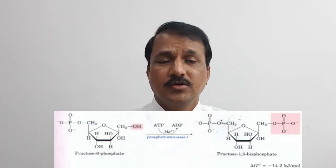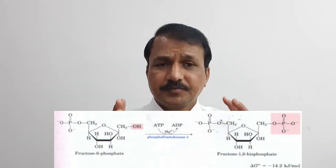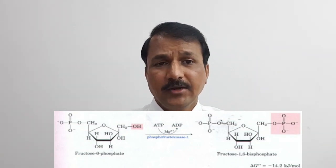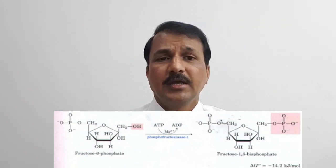Glycolysis is a universal pathway for all cells for energy needs, operating in both aerobic and anaerobic conditions. The cell controls the rate of glycolysis — either increasing or decreasing it — through PFK1. This enzyme converts fructose 6-phosphate into fructose 1,6-bisphosphate in an ATP-dependent irreversible reaction, making it thermodynamically spontaneous.